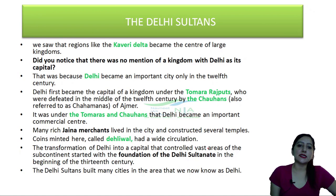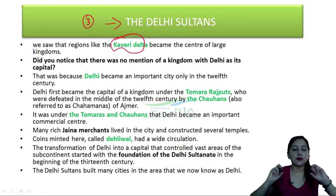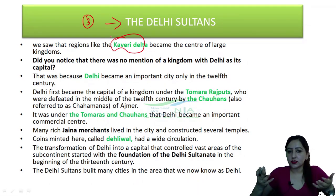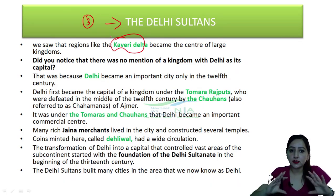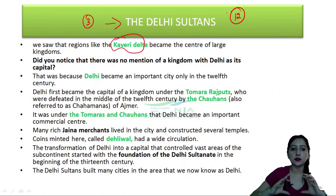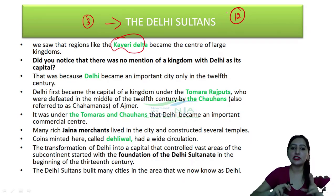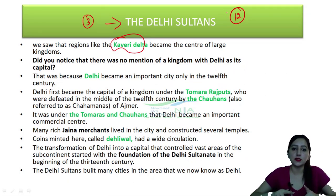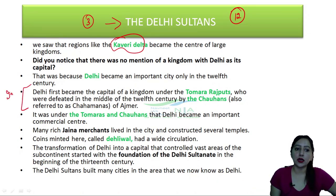Now let's start chapter number 3 — the Delhi Sultanate. First, you will notice that there was no mention of a kingdom with Delhi as its capital in earlier periods. Only in the 12th century did Delhi become an important city. Delhi first became the capital of a kingdom under the Tomar Rajputs, and then in the middle of the 12th century, the Chauhans also made Delhi their capital. This is a very important fact.